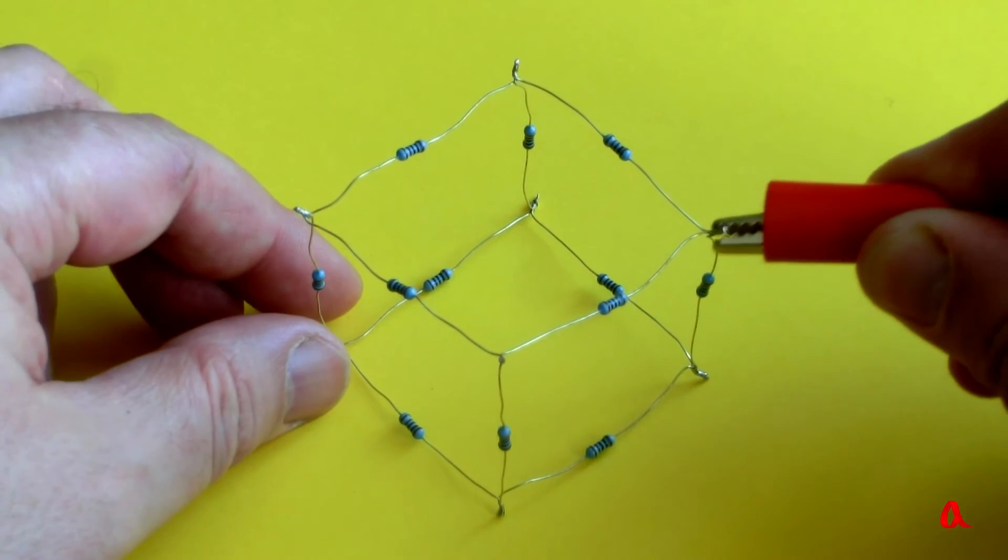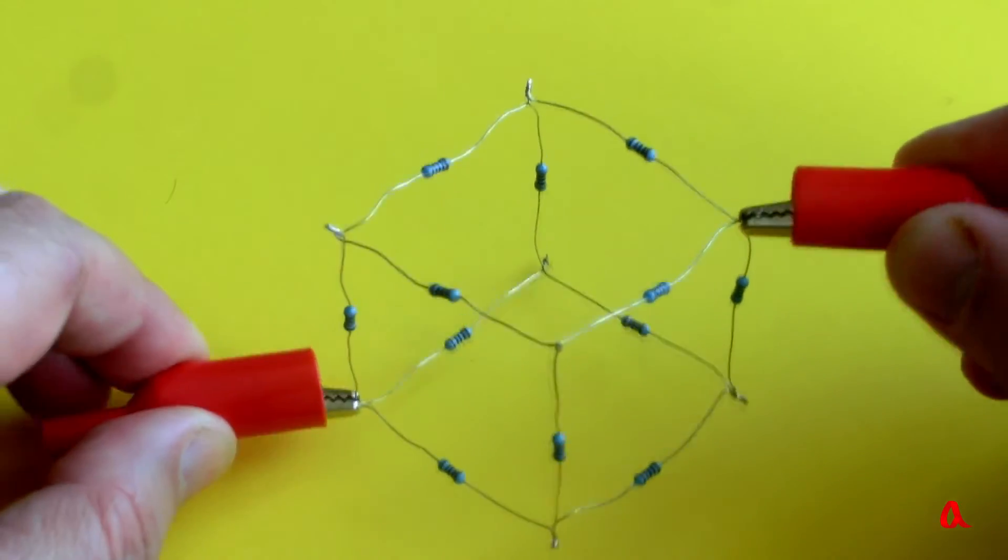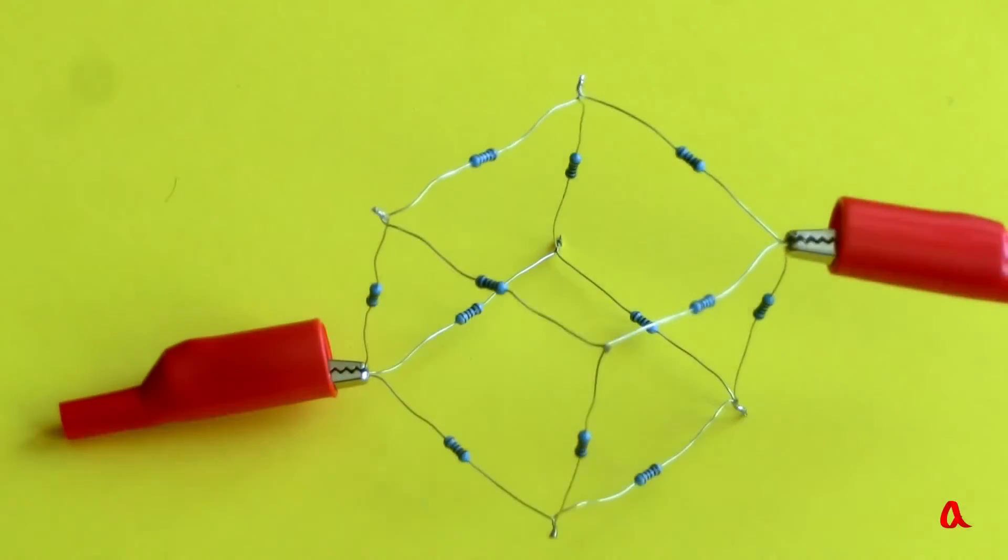I attach two alligator clips to the opposite vertices of the cube. The question is, what will ohmmeter resistance readings be with this kind of connection?